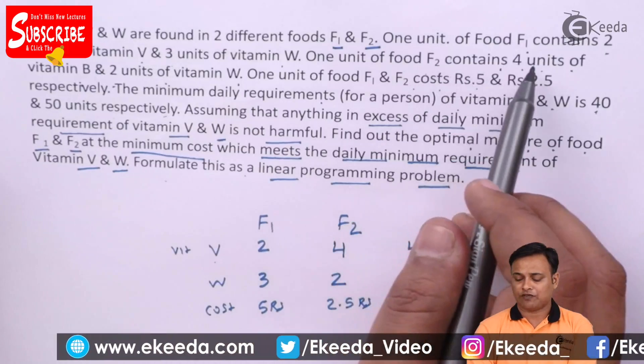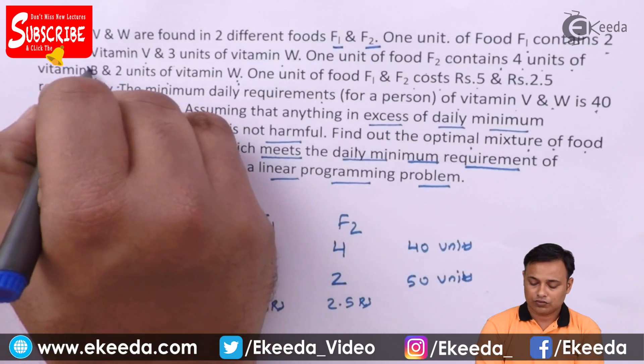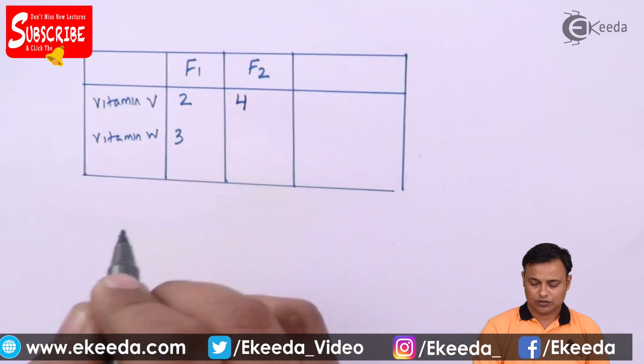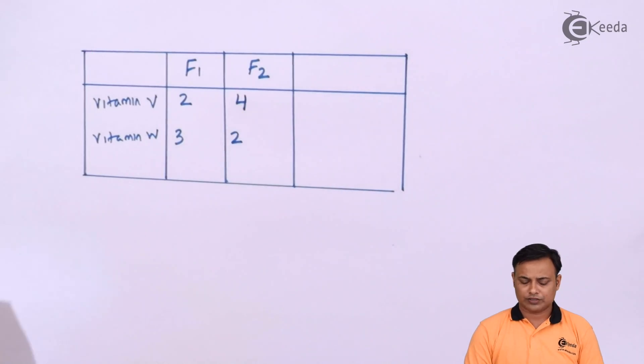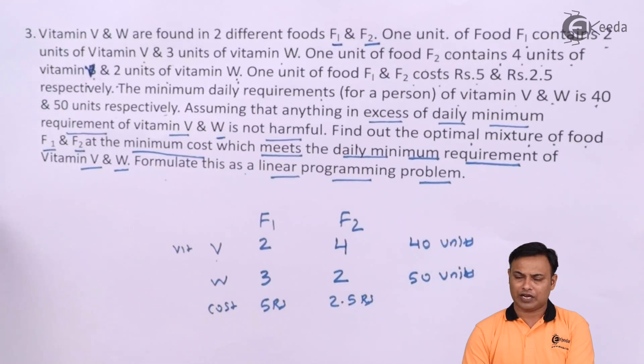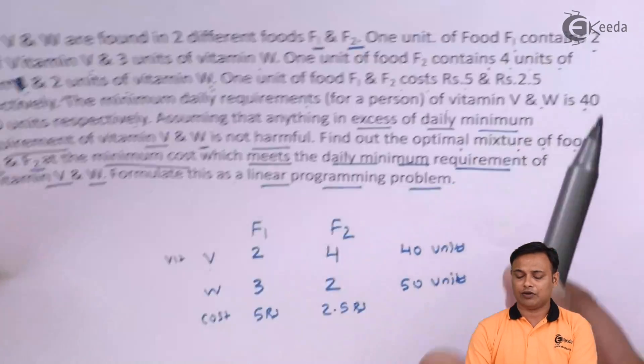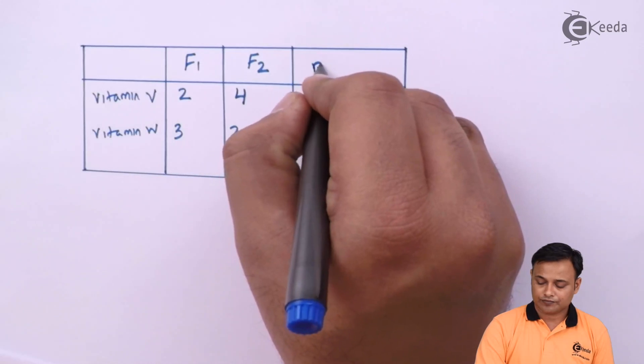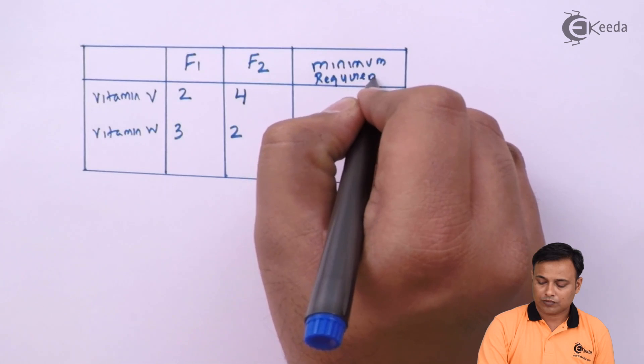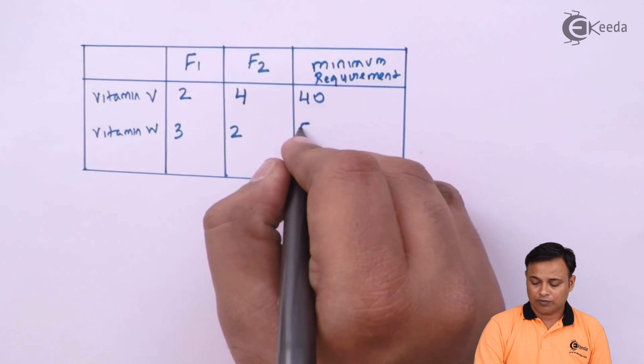1 unit of F2 contains 4 units of vitamin V and 2 units of vitamin W. So, F2 has 4 units and 2 units. Then we are given the minimum requirement. Minimum requirement is the minimum amount of vitamins they require every day. For this we are given 40 and 50 for V and W. V minimum requirement is 40 units and W is 50 units.